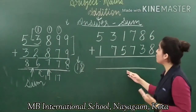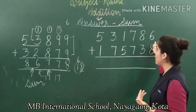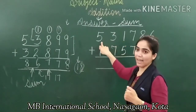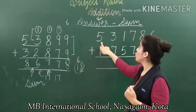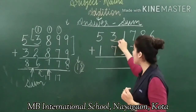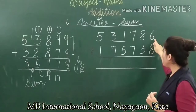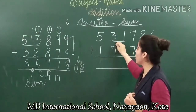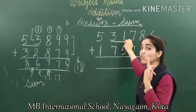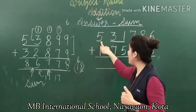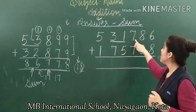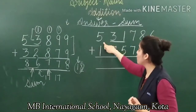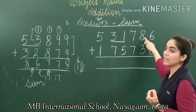The next example has six-digit numbers. Start reading: ones, tens, hundreds, thousands, ten thousands, lakh. It goes up to lakh. Reading together — ones, tens, hundreds, thousands, ten thousands form the thousands series, then lakh — so: five lakh, thirty-one thousand, seven hundred, eighty-six. So the first addend is five lakh, thirty-one thousand, seven hundred, eighty-six.